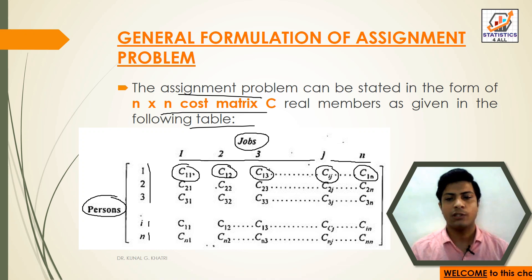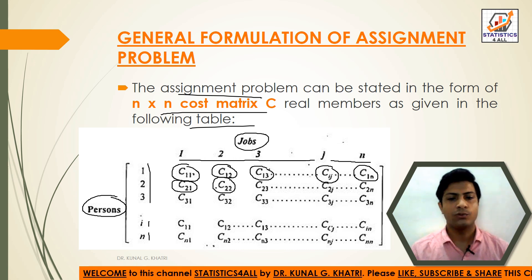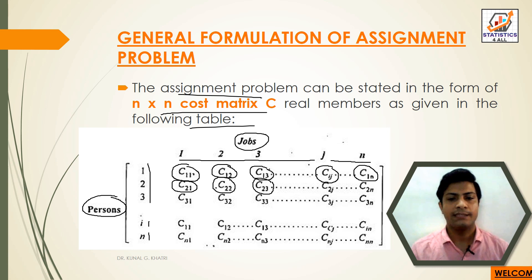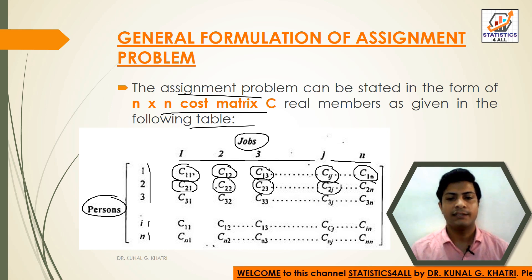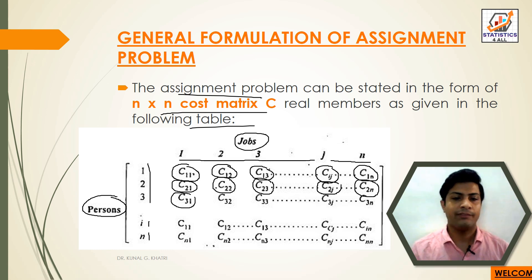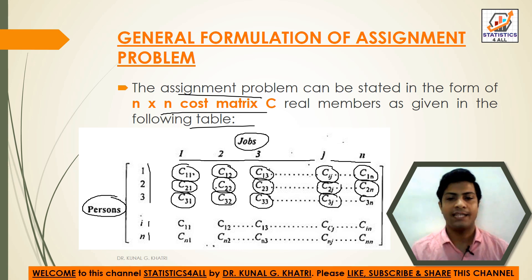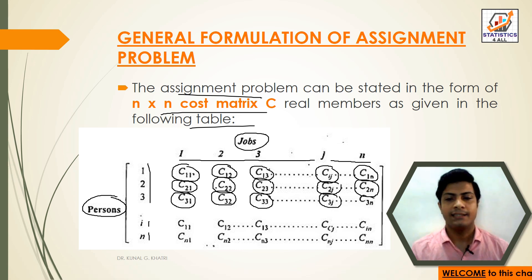C21 is second row first column, C22 second row second column, C23 second row third column, C2j second row jth column, and C2n second row nth column. Then C31 third row first column, C32 third row second column, C33 third row third column, C3j third row jth column, and so on up to C3n.